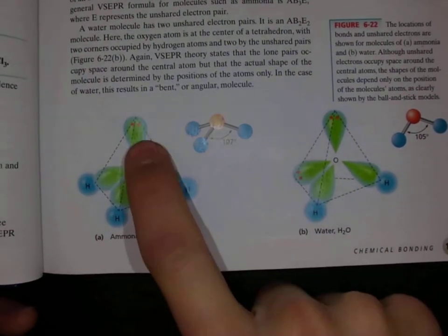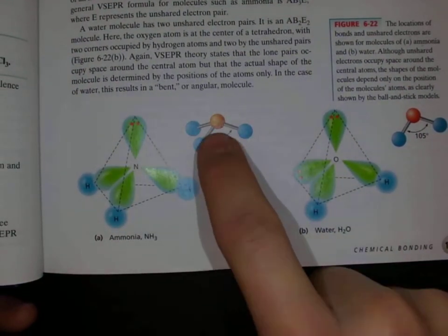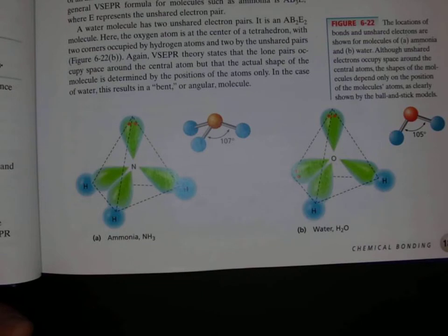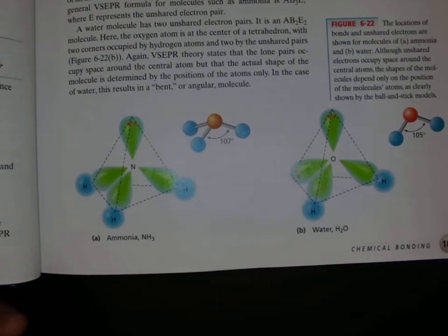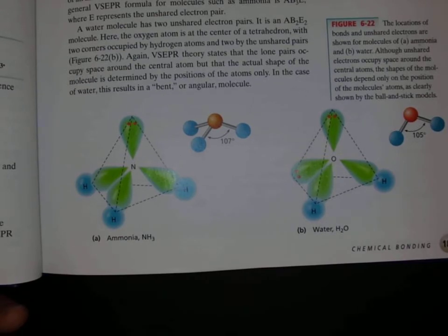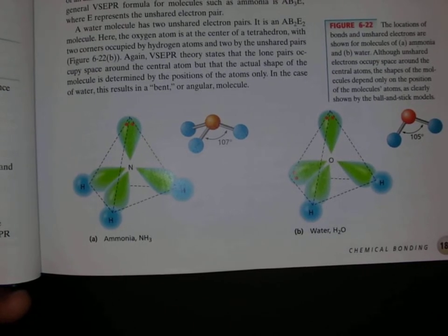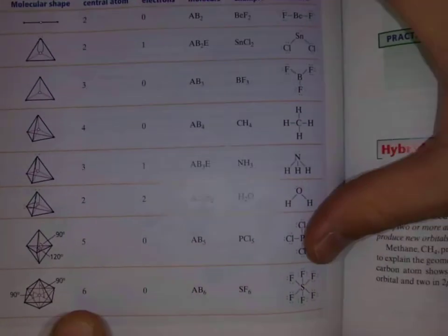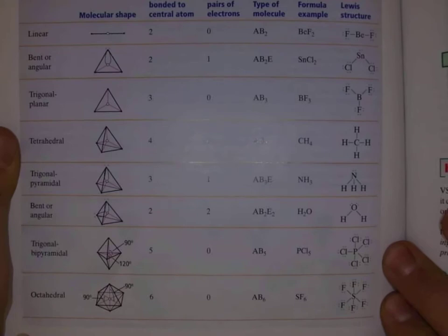Similar things happen if we have lone pairs of electrons rather than bonds. Lone pair electrons can push the electrons that are in bonds further away as well, by kind of changing the orbitals. Overall, depending on the number of atoms attached and the number of lone pairs, it tells us about the shape of the molecule, and that shape is going to influence a lot of the reactivity. On the next page, we have all of this information summarized.